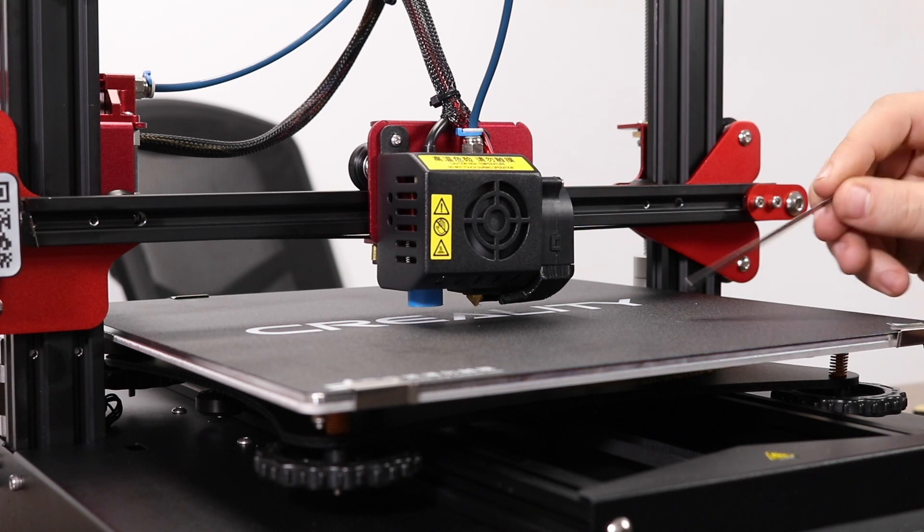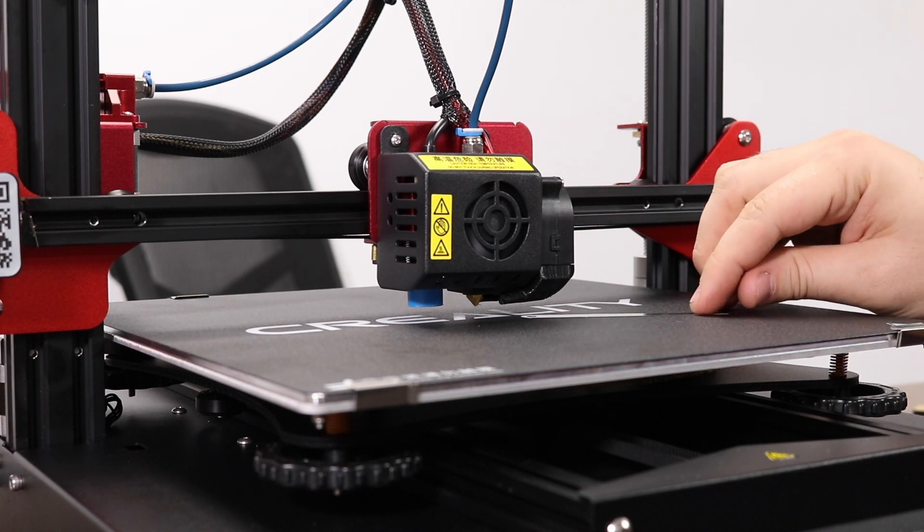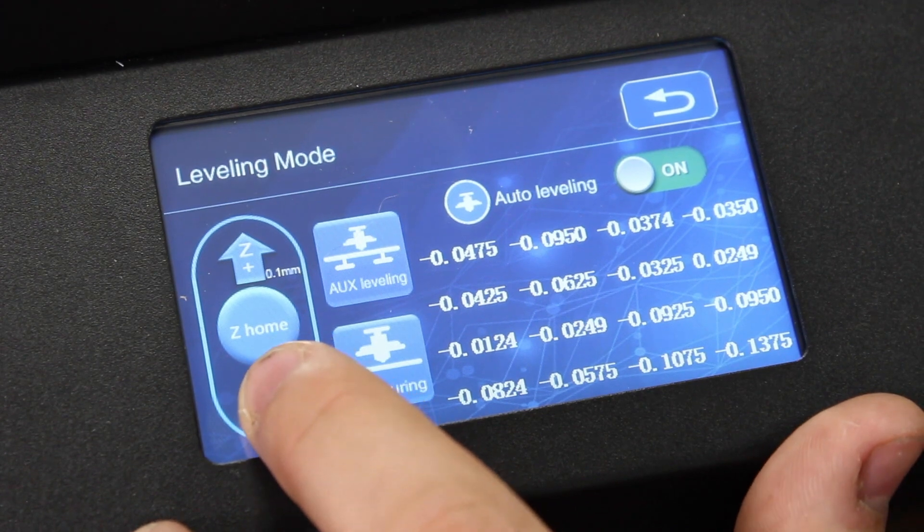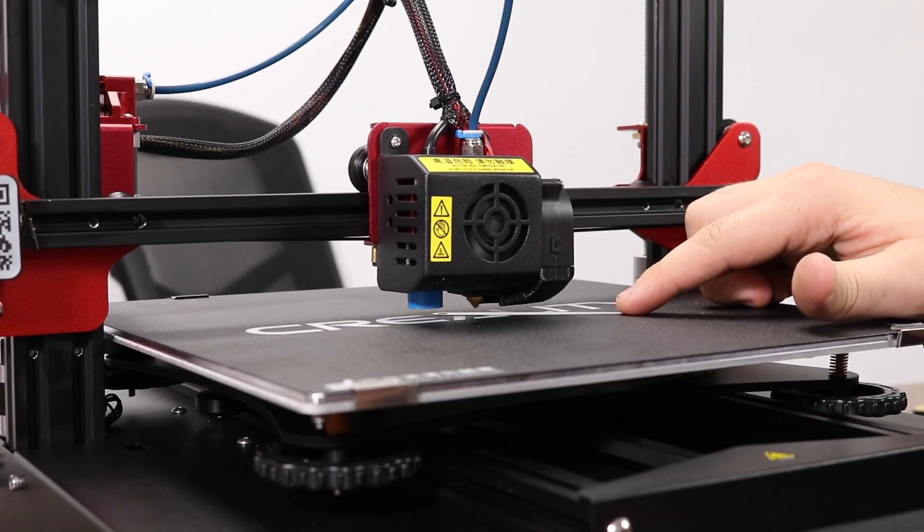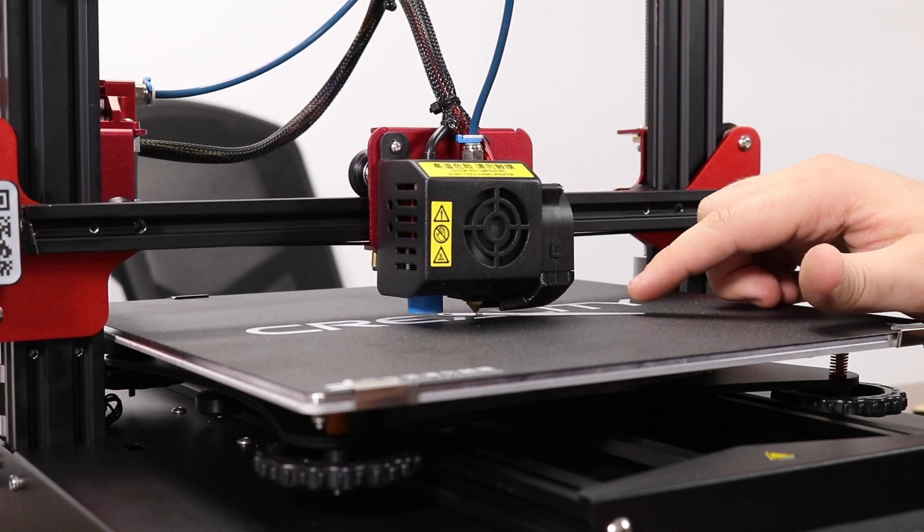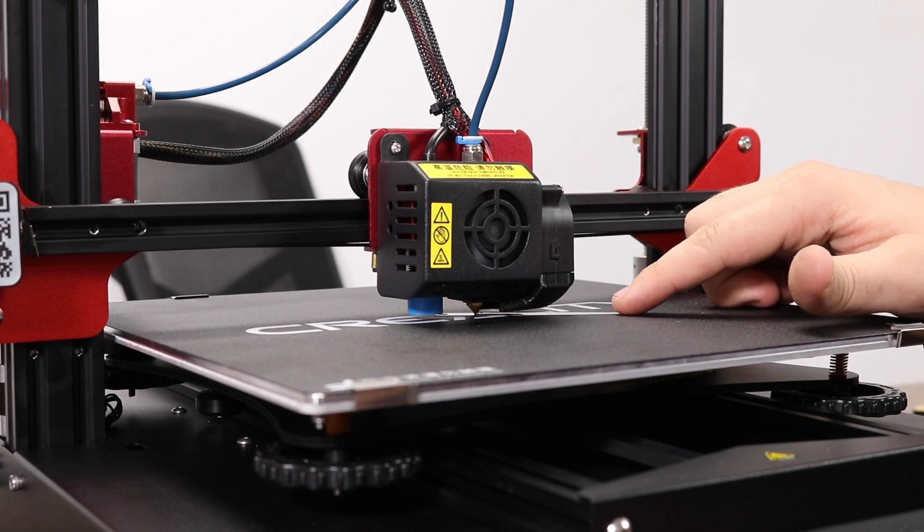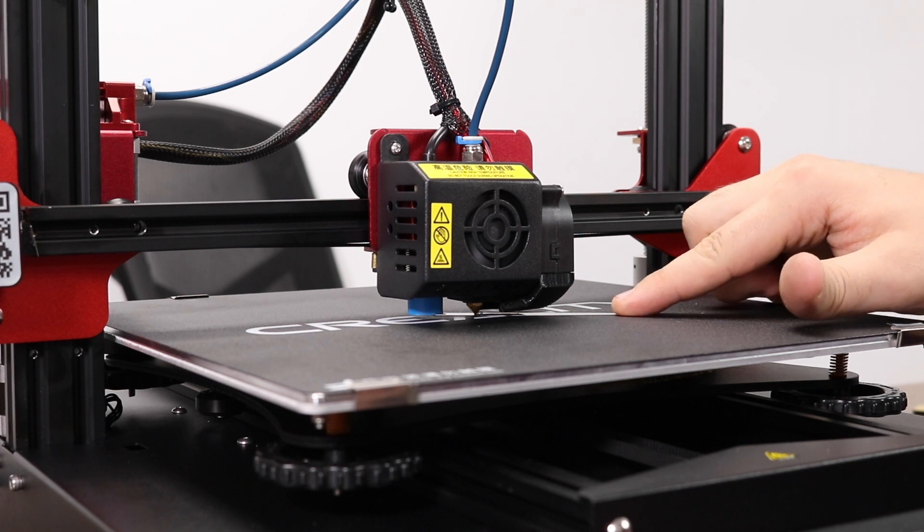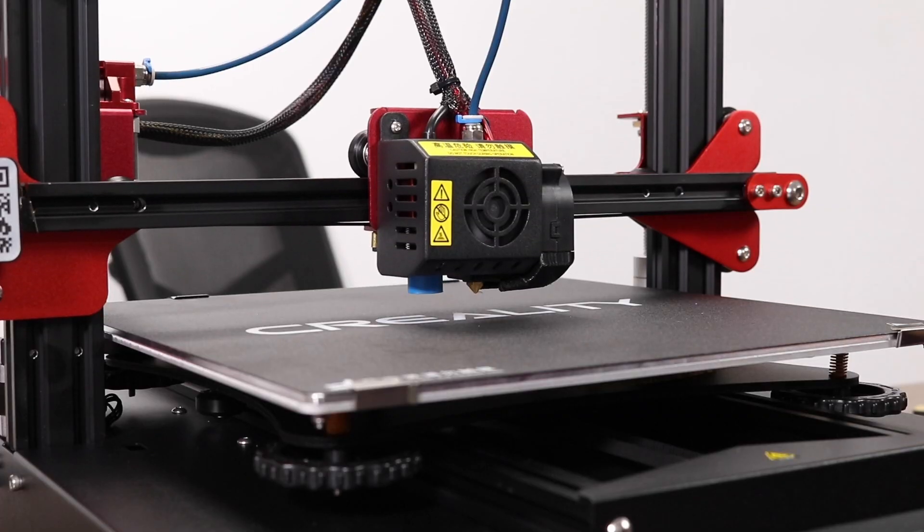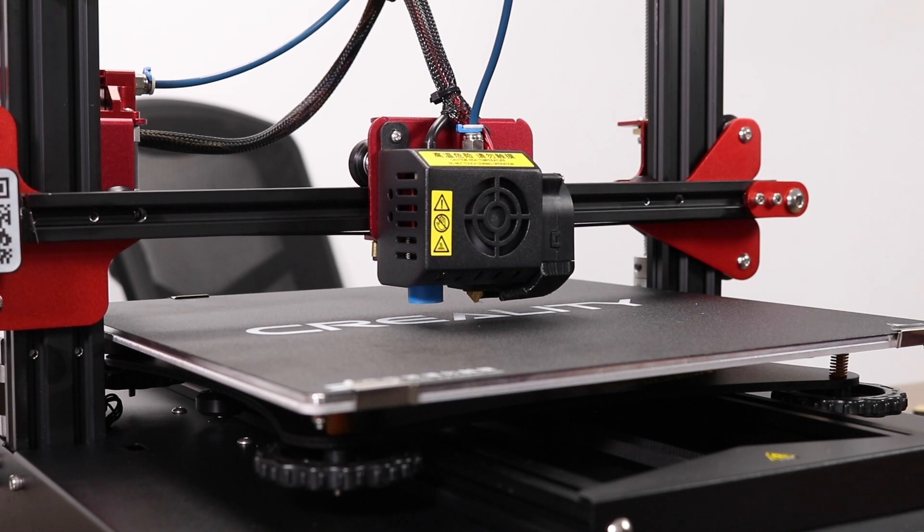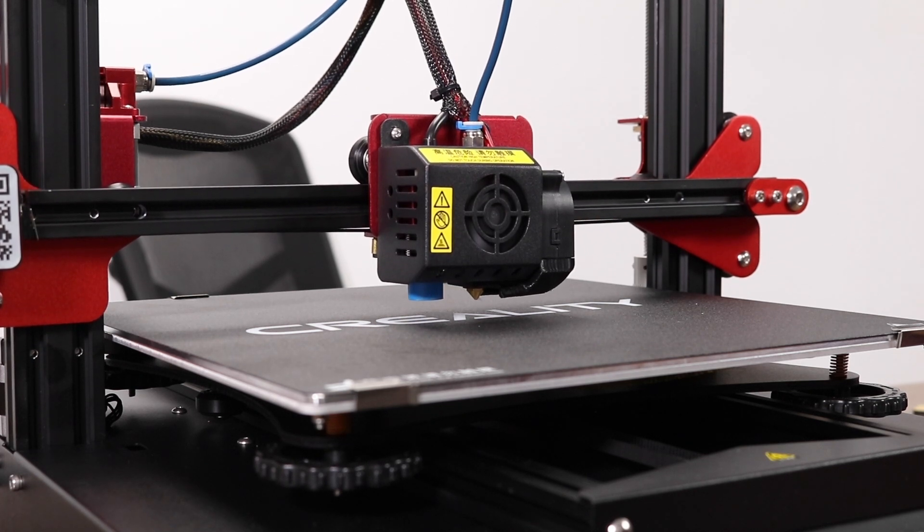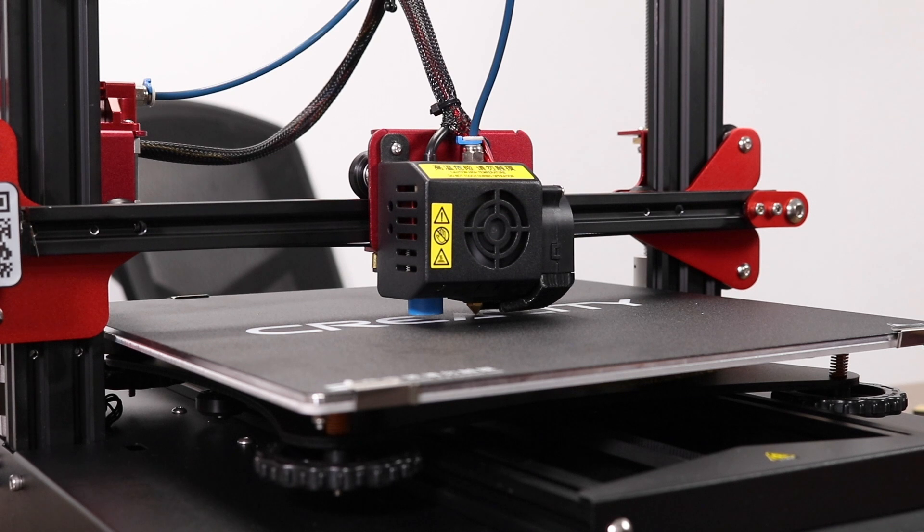Next, we're going to take our small 0.2mm feeler gauge and use that to gap the nozzle. Put it underneath the nozzle. Start pressing the Z Minus button under Z Home. You should see the gantry slowly start to come down. Keep pressing and keep pressing until it comes down enough for the nozzle to touch the feeler gauge. After making contact, remove the feeler gauge and press Z Home a final time. This will save the setting. If all goes well, the printer should home again and then finally come to rest at the distance you set it to.